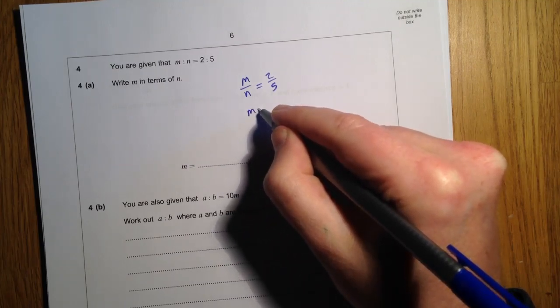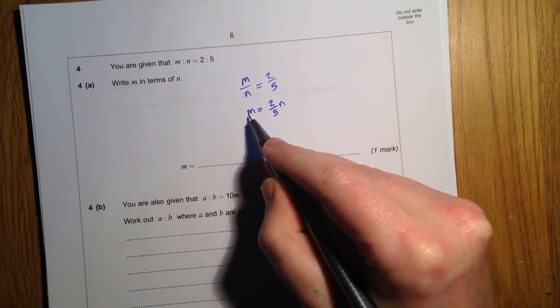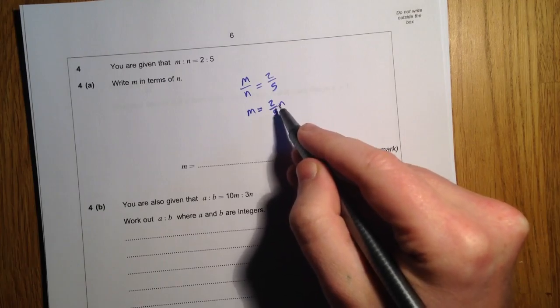If I multiply both sides by n, I get 2 fifths n. So m is smaller than n, it's only 2 fifths of n.